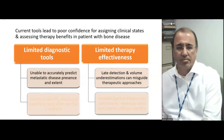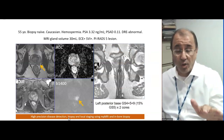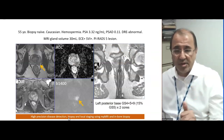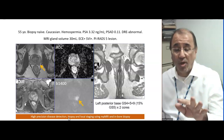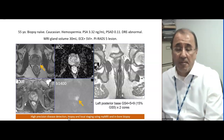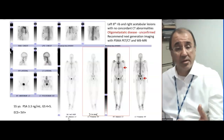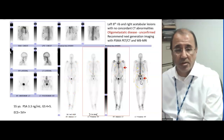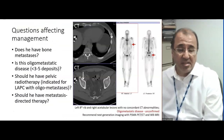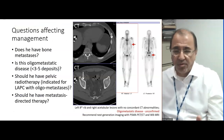Here's a 55-year-old man with a low PSA. He has a 3 Tesla MRI scan showing locally advanced, high-risk prostate cancer, which was diagnosed by an in-bore biopsy — a high-precision diagnosis. As a staging procedure, the bone scan recommended in the guidelines shows two lesions, shown here with red arrows. These were evaluated by a CT scan, which was normal at both sites.